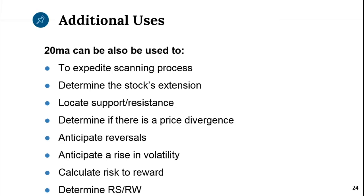The 20MA helps with calculating reward to risk because you can use it to calculate targets. It is also helpful when determining relative strength or relative weakness — comparing the stock to the market or to its sector. A stock above a rising 20 would be stronger than a stock below the 20, and a stock with a rising 20 has more relative strength than one with a flat 20.